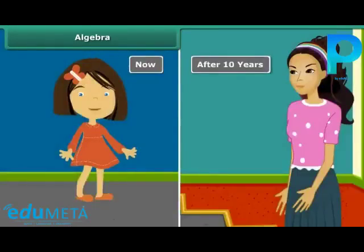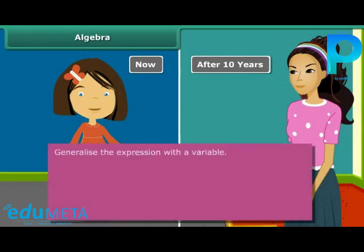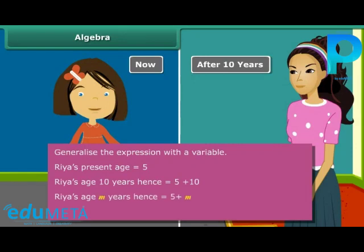Rhea is 5 years old now. Express her age 10 years from now, and generalize the expression with a variable. Rhea's present age is 5. Rhea's age after 10 years is 5 plus 10. Rhea's age m years hence is 5 plus m. Therefore, m years from now, Rhea will be 5 plus m years old.